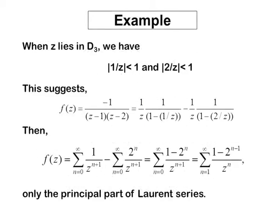Similarly, when z lies in domain d3, the radius of convergence in both cases is 1, and the domain of convergence is |1/z| < 1 and |2/z| < 1. This suggests the power series can be written as f(z) equal to the summation of 1 over z^(n+1) minus 2^n over z^(n+1). Clearly this has only negative powers of z, and therefore the principal part of the Laurent series exists.